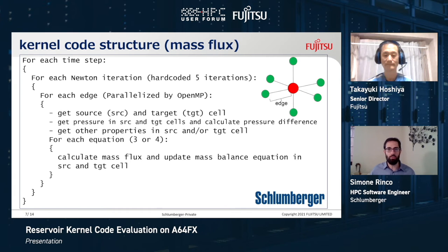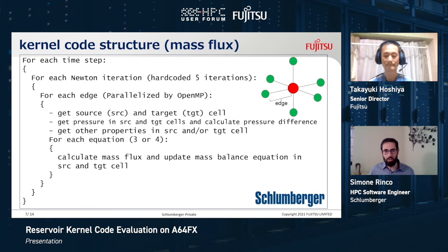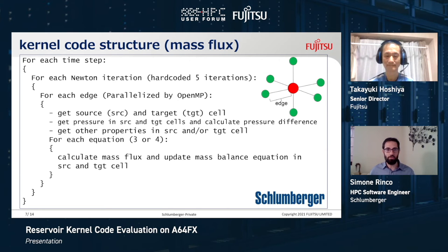The inner loop is a loop over equations, because the balance equation is an equation for a single component, but in a typical reservoir we have three components — oil, gas, and water — plus potentially a fourth equation describing the energy equation in thermal simulations. The inner loop opens the door to many possible optimization techniques such as loop unrolling or vectorization. In this loop we calculate the mass flux for a particular component and update the mass balance in both the source and target cells. These four loops very well represent what the simulator is doing, and Fujitsu has used our sample code to test their hardware for possible reservoir simulation applications.